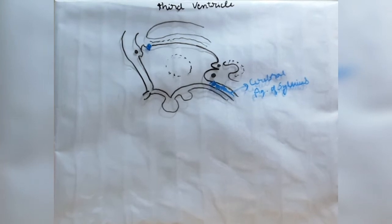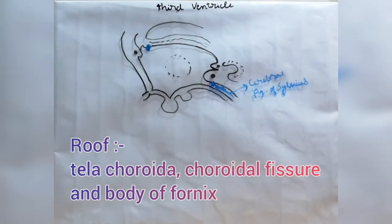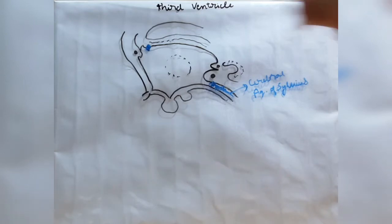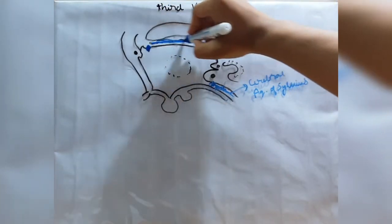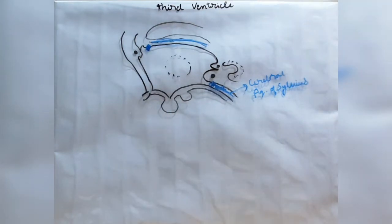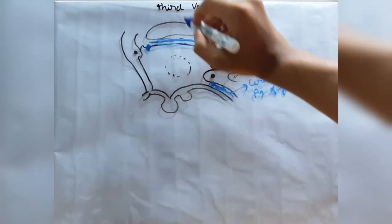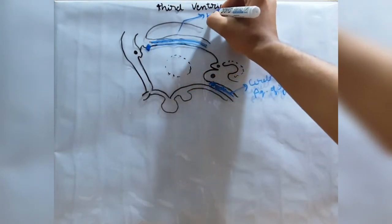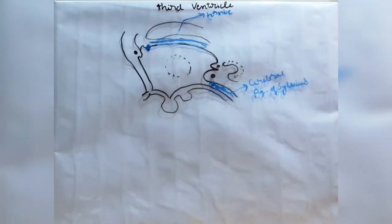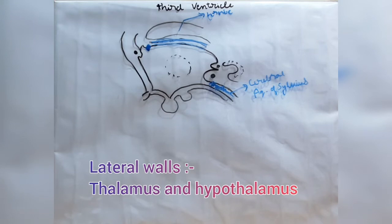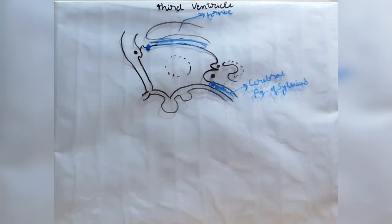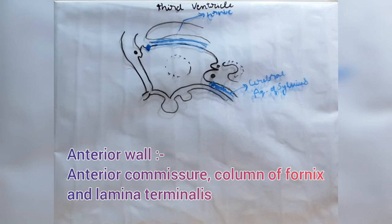The roof of the third ventricle is formed by the tela choroidea, choroidal fissure, and the body of fornix. The lateral walls are formed by the thalami above and the hypothalamus below. The anterior wall is formed by the columns of fornix, anterior commissure, and lamina terminalis.